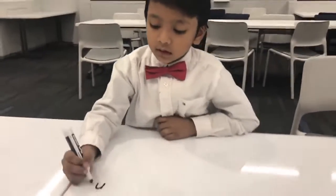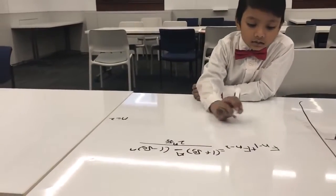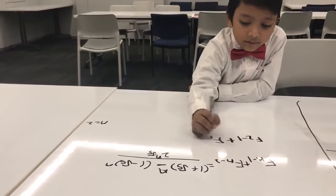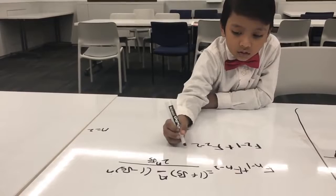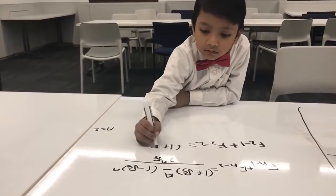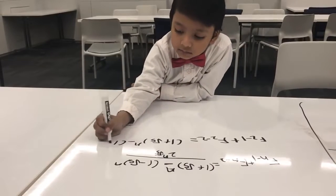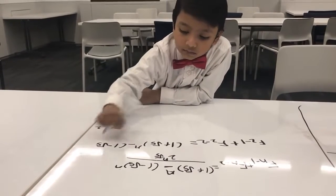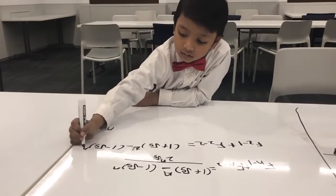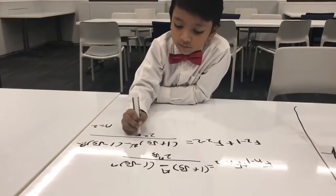I would like to set n to 2. So, F(2 minus 1) plus F(2 minus 2) equals 1 plus square root of 5 raised to 2, minus 1 minus square root of 5 raised to 2, all over 2 squared times square root of 5.